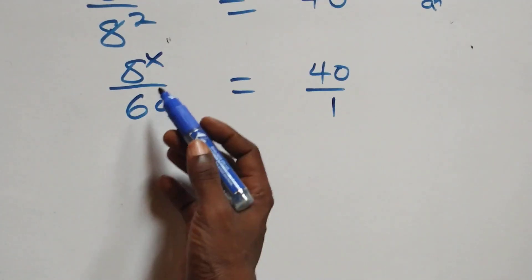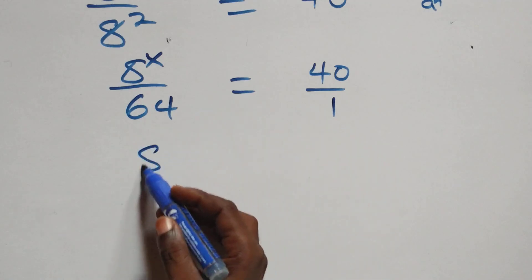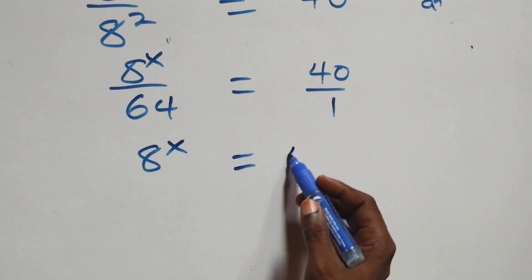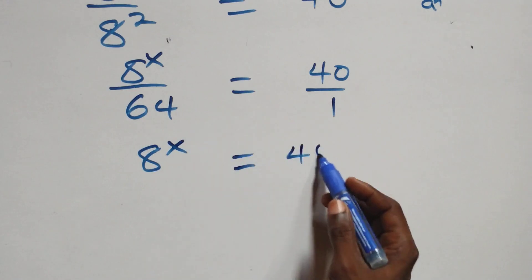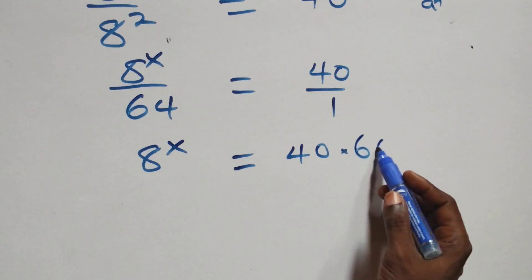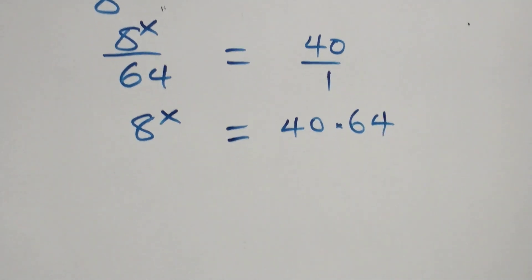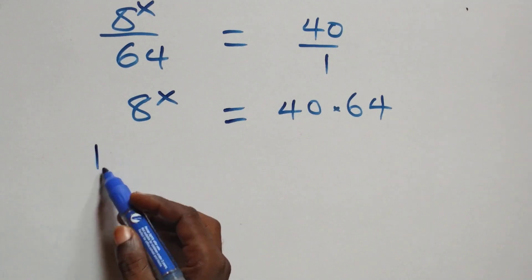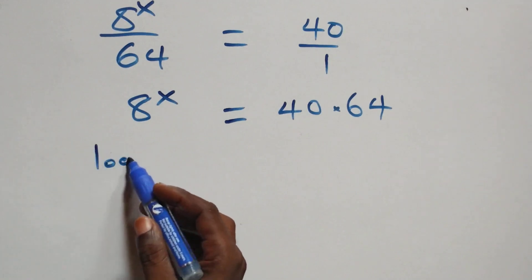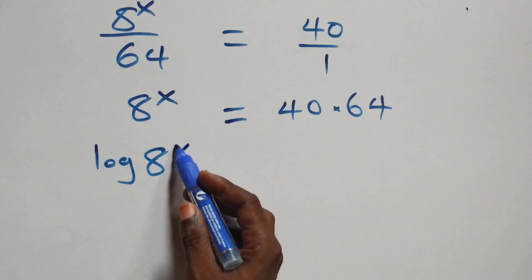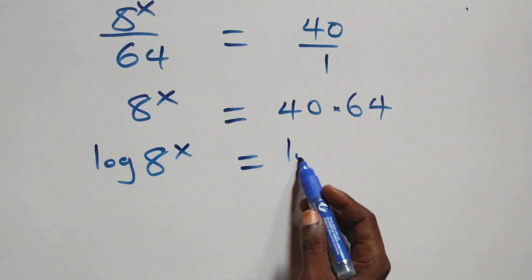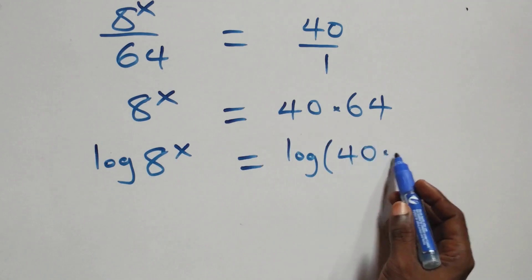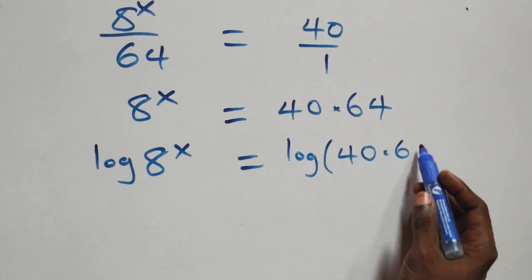We cross multiply: 8 raised to power x times 1, which is the same as 8 raised to power x, equals 40 times 64. Then we take the log on both sides: log of 8 raised to power x equals log of 40 times 64.